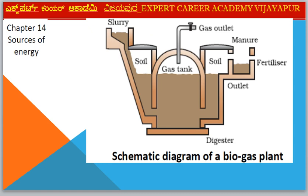Next diagram — Chapter 14: Sources of Energy. Diagram: Biogas Plant. Parts include Digester, Slurry Inlet, Gas Tank, Gas Outlet, Outlet for Fertilizer/Manure, and Soil.